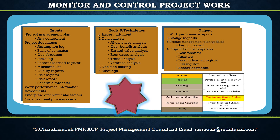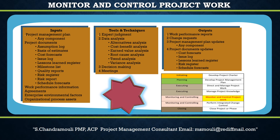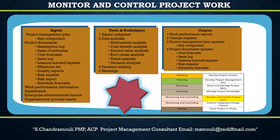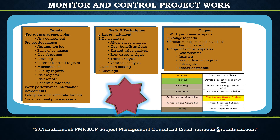The next input is Cost Forecasts. Cost forecasts are derived from progress against the cost baseline and computed estimates to complete. This is typically expressed in terms of Cost Variance (CV) and Cost Performance Index (CPI). An Estimate at Completion (EAC) can be compared to the Budget at Completion (BAC) to see if the project is still within tolerance ranges or if a change request is required.